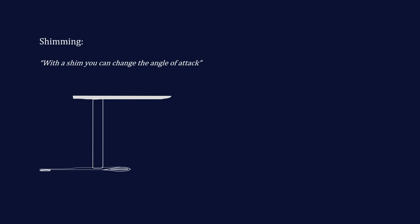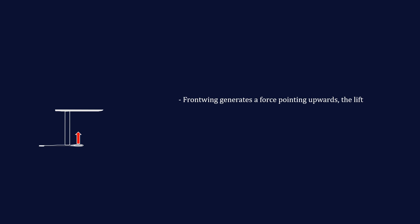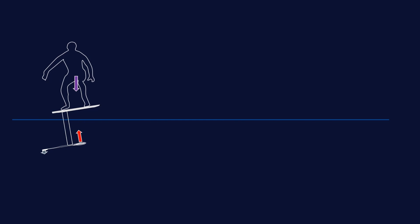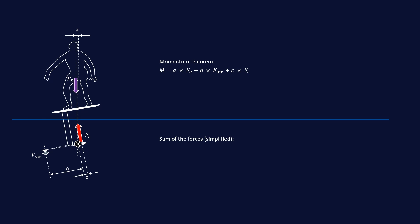Looking at the forces acting in our setup, we know that the front wing generates a force pointing upwards, the back wing generates a force pointing downwards, and the rider generates a force pointing downwards as well. In my video about the importance of the body position and weight distribution when pump foiling, I explained in detail the forces and moments acting in this setup. From there we know that the momentum theorem as well as the sum of the forces is also valid for pump foiling.